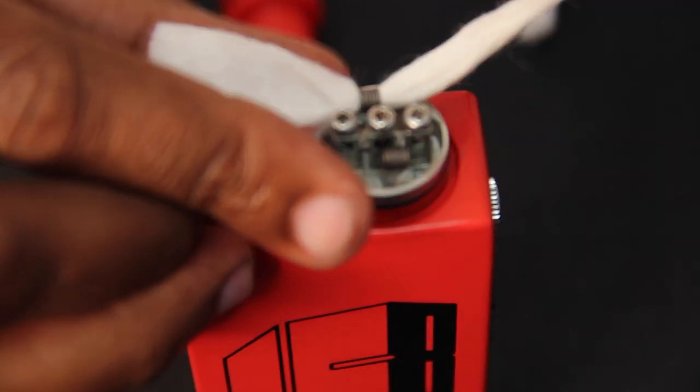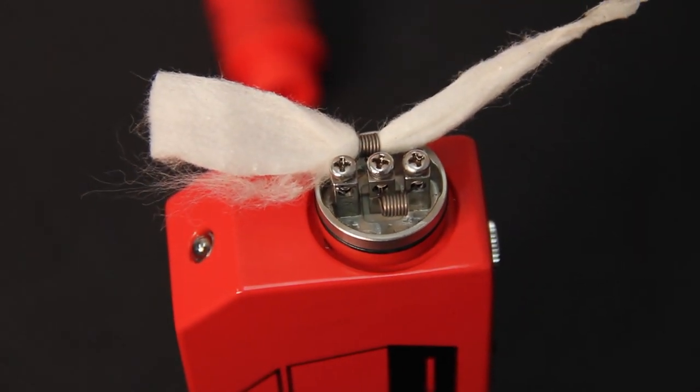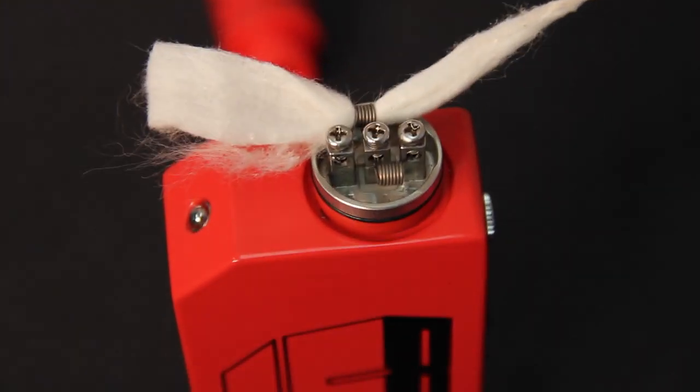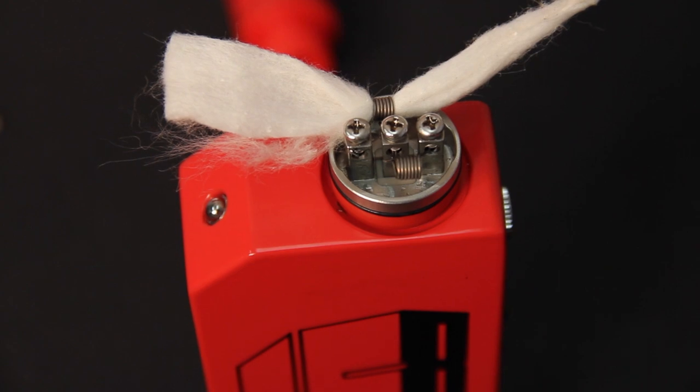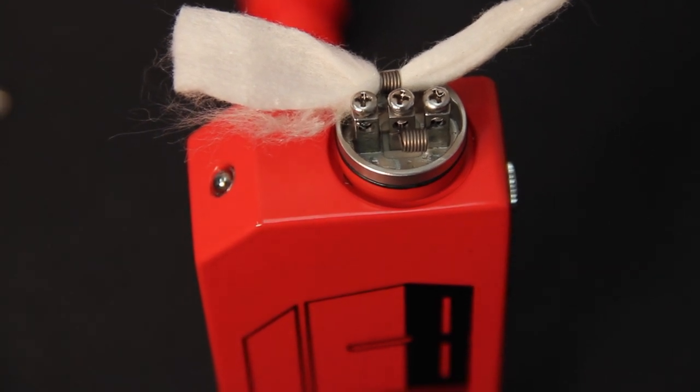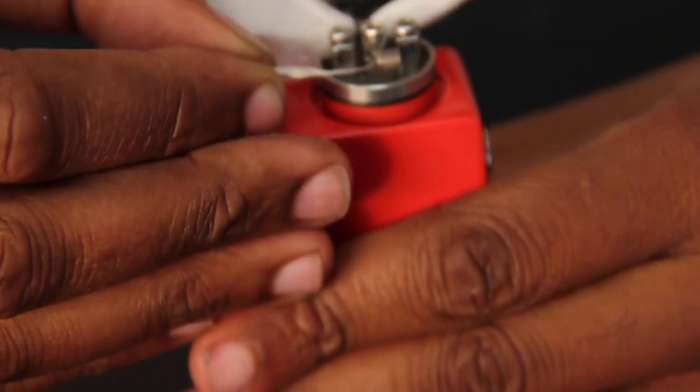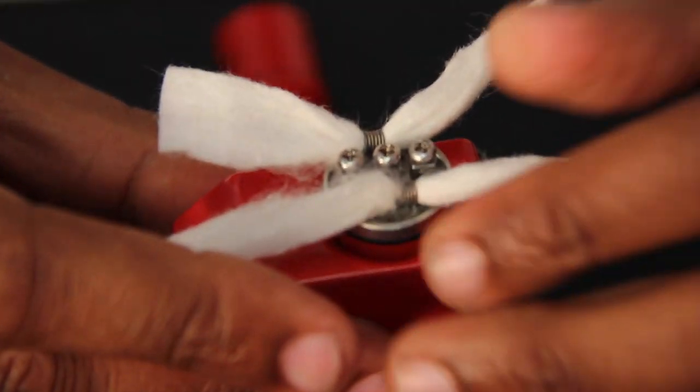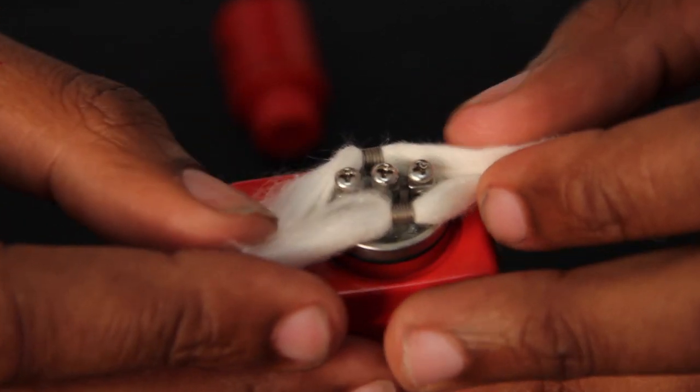Now the beauty of cotton, my friends, is that let's say you're doing it and you threaded it through, but it was just too big and it wasn't going through the coil, then you would just pull out a couple strands of the cotton, that way you can thread it through. But these ones are going to be perfect because I'm pretty good at this.